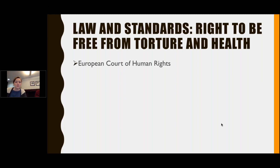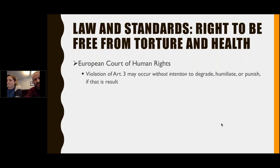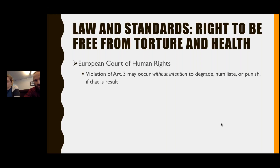The European Court of Human Rights has found that a violation of Article III — the prohibition against torture in the European Convention on Human Rights — may occur without any intention to degrade, humiliate, or punish. This is important: if a prisoner or detainee is degraded or humiliated, even if the action wasn't intentional, that can amount to torture under the European Court. No intent is required.